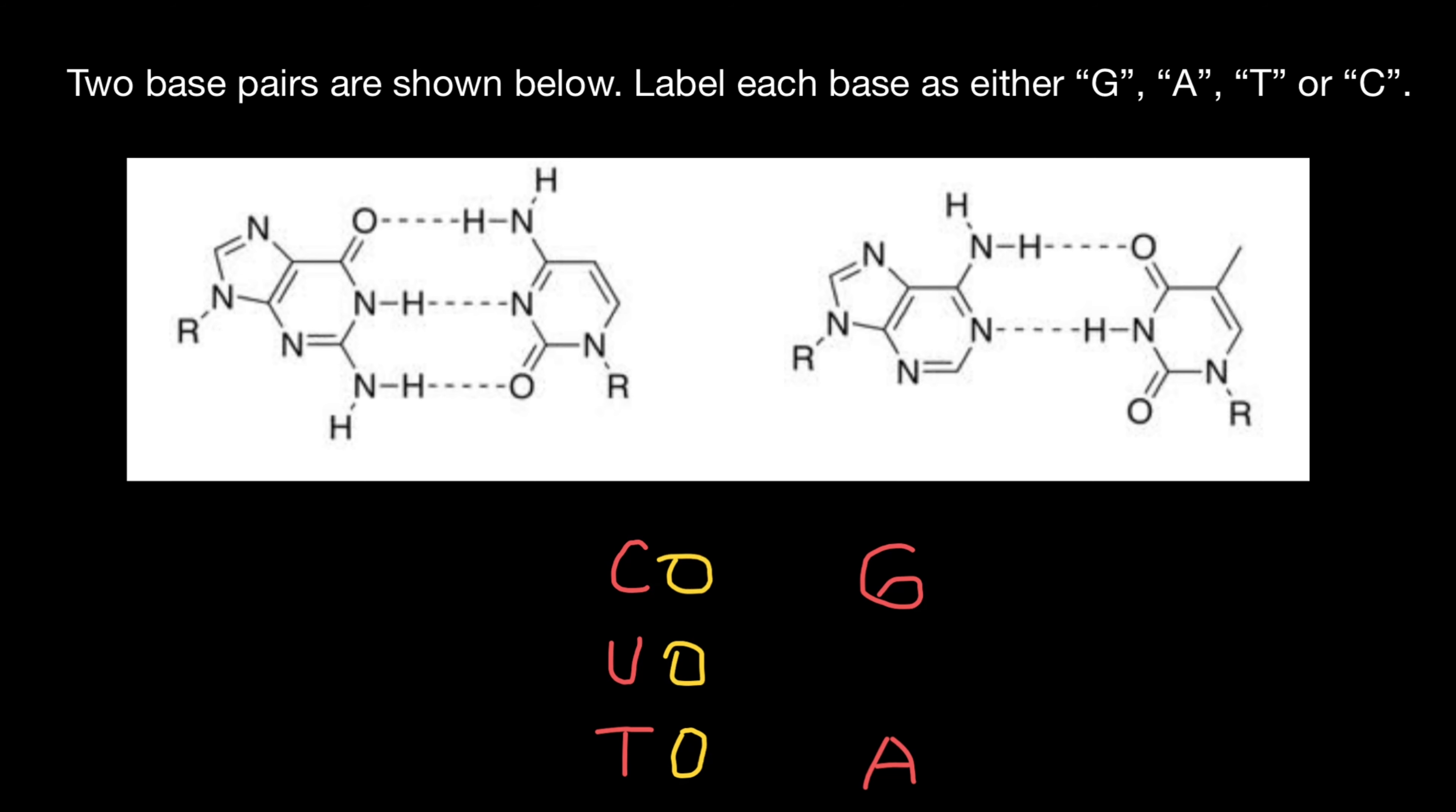And now you know that guanine and adenine, these bases have two rings. It is very easy to memorize this as a mnemonic technique. CAT stands for the bases with one ring.